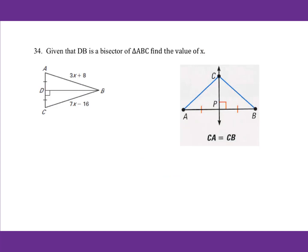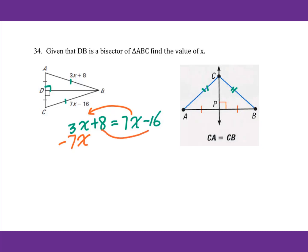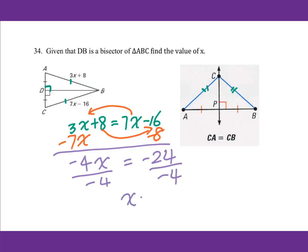For number 34, given that DB is a bisector of triangle ABC, find the value of X. DB is a perpendicular bisector because of the 90-degree angle. The rule: any point on the perpendicular bisector is equidistant from both endpoints, so AB equals BC. Set up: 3X plus 8 equals 7X minus 16. Subtract 7X and subtract 8: negative 4X equals negative 24. Divide by negative 4: X equals 6.